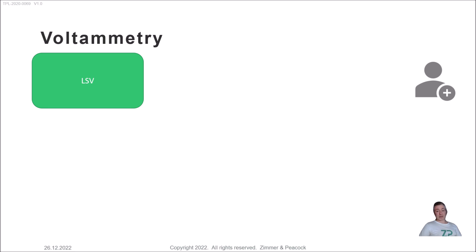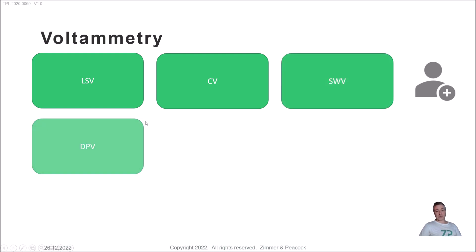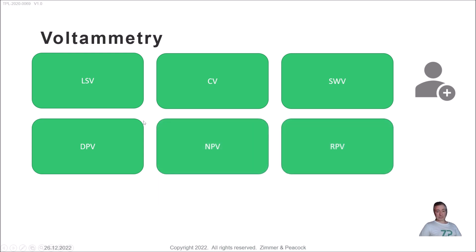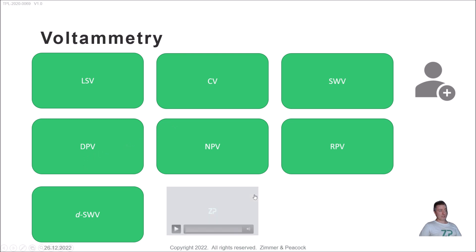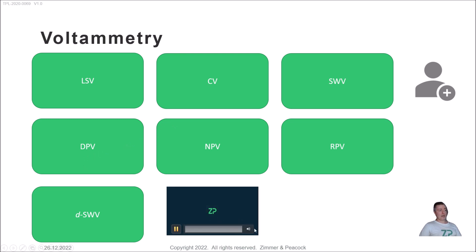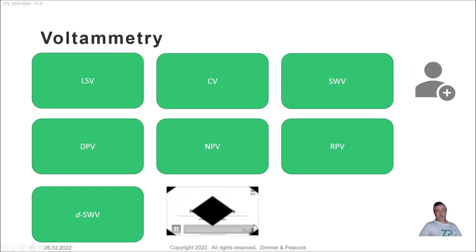In terms of voltammetry, we're going to do a series of videos actually doing these experiments online and demonstrating them. Linear sweep voltammetry is obviously a technique, as is cyclic voltammetry and square wave voltammetry — which we will talk about the waveform today — differential pulse voltammetry, and normal pulse voltammetry. One that won't be touched today is reverse pulse voltammetry, and there's also differential square wave voltammetry which one of my academic colleagues is spearheading.